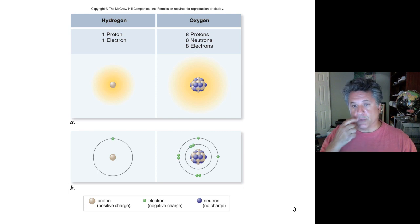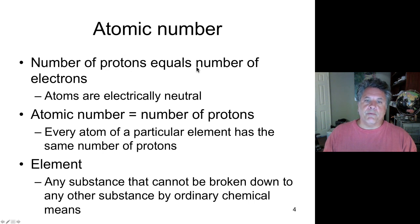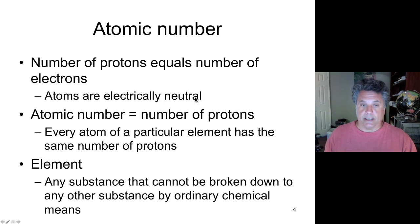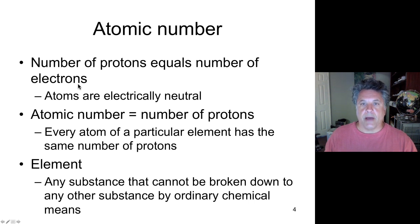Rather, they are orbitals which have complex shapes. When we talk about elements, the number of protons equals the number of electrons, so atoms are electrically neutral unless they lose or gain an electron. In that case we'll talk about cations and anions. For now, atoms are electrically neutral because the positive charges of the protons in the nucleus are balanced by the negatively charged electrons in orbitals around that nucleus.